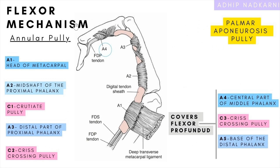To summarize: the flexor mechanism has two components, with the annular pulley playing a major role in stability. It has A1 through A5 major pulleys, and the most important are A2 and A4 — in surgery, A2 and A4 are preserved while the rest can be sacrificed. There is also the palmar aponeurosis pulley. The pulleys keep the flexor tendon in place for better work efficiency, though they reduce momentum. We also covered trigger finger as a clinical correlation. That's all for today — thank you for watching.